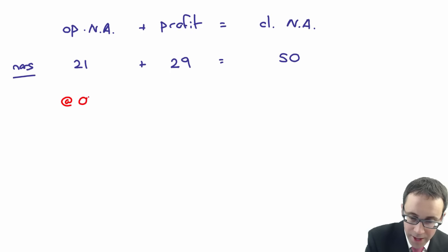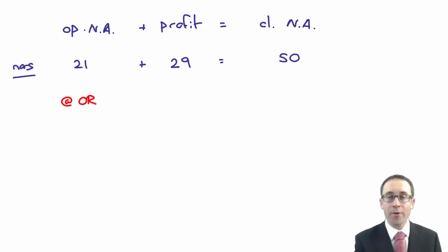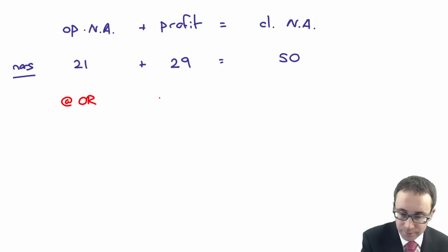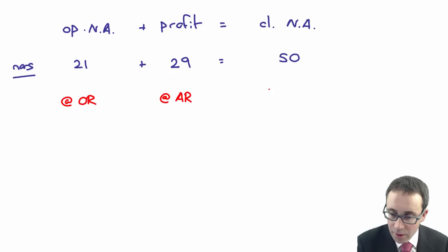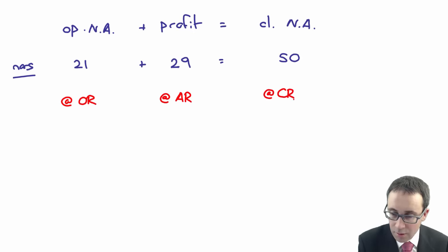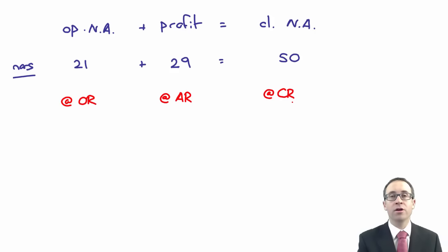Because the opening net assets are going to be at the opening rate, which essentially is last year's closing rate. The profit is going to be translated at the average rate. And the closing net assets will be at the closing rate.